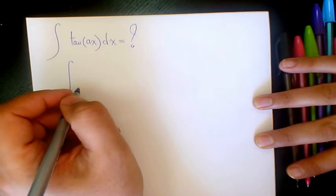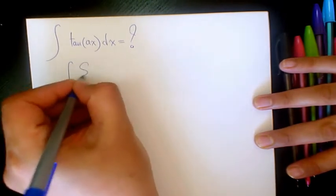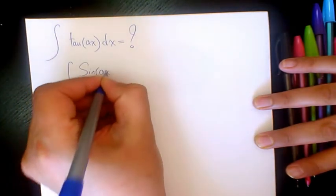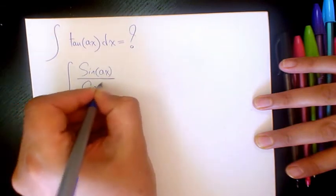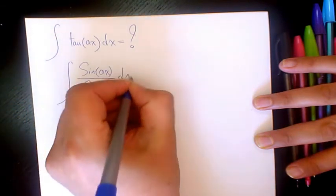You know tan is sine over cosine, so it's going to be sine ax over cosine ax dx.